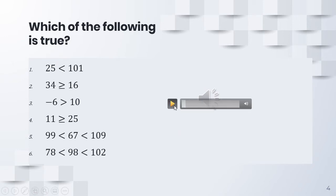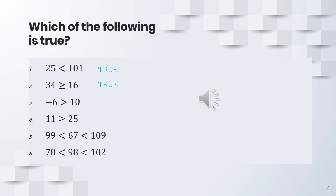Okay, so let's discuss your answers. For number one: true. Number two is true as well. Number three: false. Number four: false. Five is false. And then six is true. If you got all six correctly, then you did a good job.